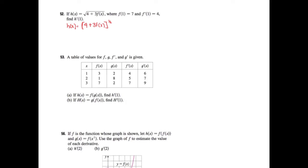By writing it that way, I can see that 4 plus 3 f of x is my baby, and I'm doing that to the 1/2 power. So h prime of x is going to be 1/2 of that to the negative 1/2, times the derivative of whatever that is, which is 0 plus the derivative of 3 f of x, which is 3 f prime of x. Remember that 3 is just a constant, so the derivative of 3 f of x is 3 f prime of x. Then I leave my baby inside.